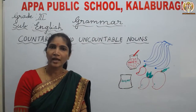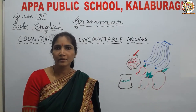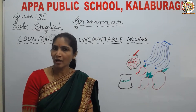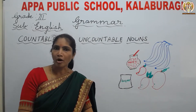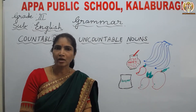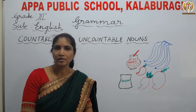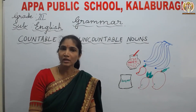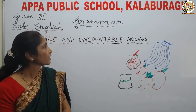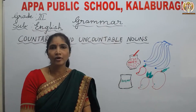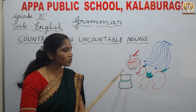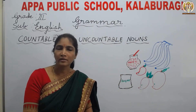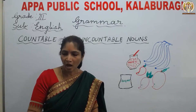Which are the nouns which we can count? We can count pen, pencil, eraser, pouch — everything we can count. Even boy, girl — one boy, two boys, we can count. But the nouns which we cannot count, they are uncountable nouns. For example, honey, sugar, rice, salt — all these we cannot count.